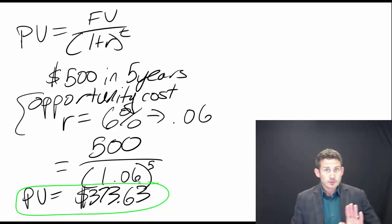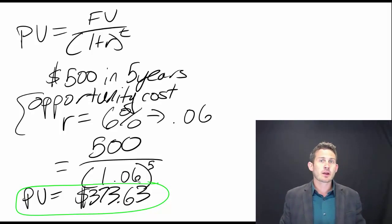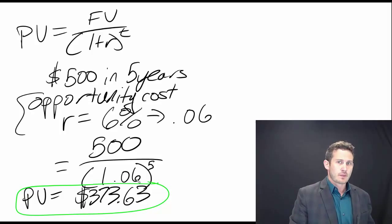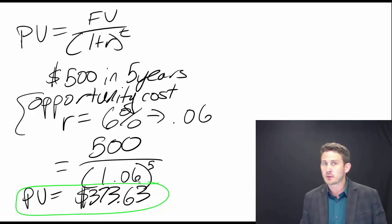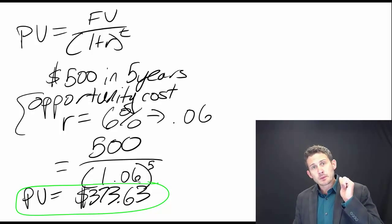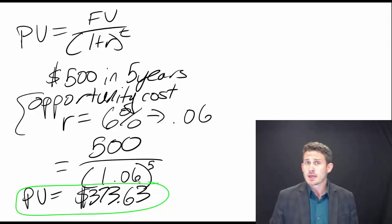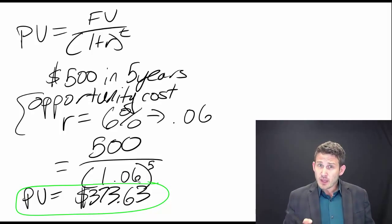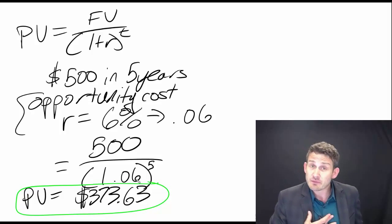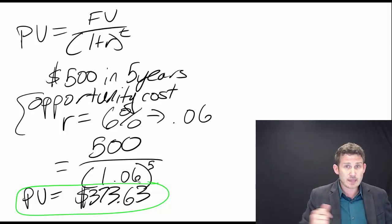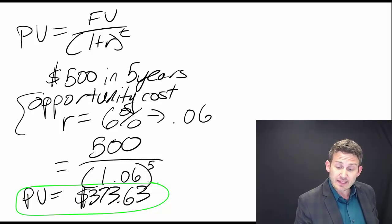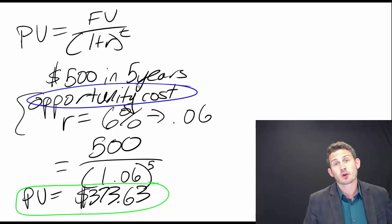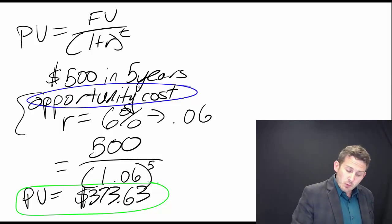That's what it's worth to us right now. If we enter an agreement where I will pay you $500 in five years, we're trying to come up with what the value of that payment is today. If we agreed on a price of $373.63, that means if you paid me $373.63 for this $500 payment right now, I will pay you $500 in five years. What you could have done otherwise is buy Apple stock and earn a return of 6%.